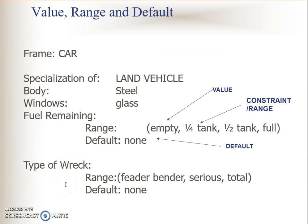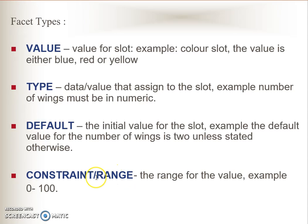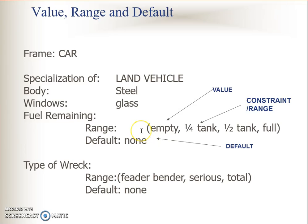For example, let's look at the car frame. The specialization or class is land vehicle, the body is steel, windows is glass. For fuel remaining, we have a range constraint: the range is either empty, quarter tank, half tank, or full — this is how we limit the value for attributes. You can also give a default value for each slot, for example none or quarter tank. The next example is type of racking for that car, where the range is Vida, Bender, Series, or Total Rack, and the default is none.